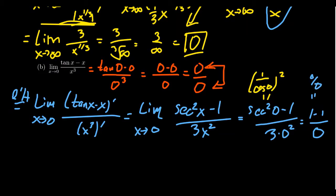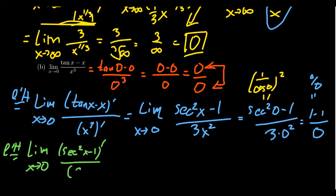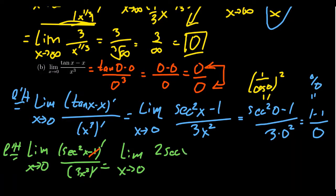That means we apply L'Hôpital's rule one more time, as long as the function has the indeterminate form zero over zero or infinity over infinity. We take the limit as x approaches zero of the derivative of secant squared x minus one over the derivative of 3x squared. The derivative of the negative one is zero since it's a constant. Using the chain rule for secant squared, we get the outer derivative two secant x times the inner derivative secant tangent, giving two secant squared x tangent x in the numerator. The denominator becomes 6x.